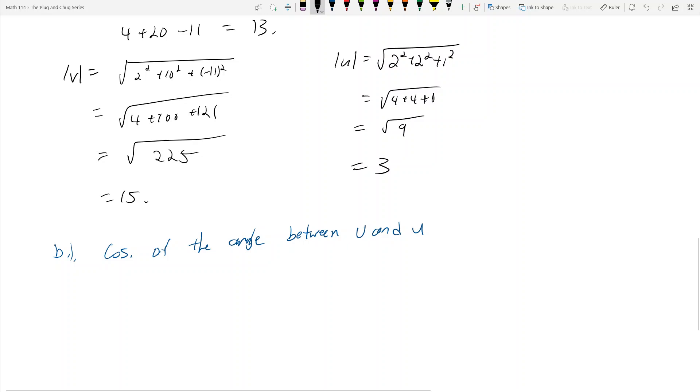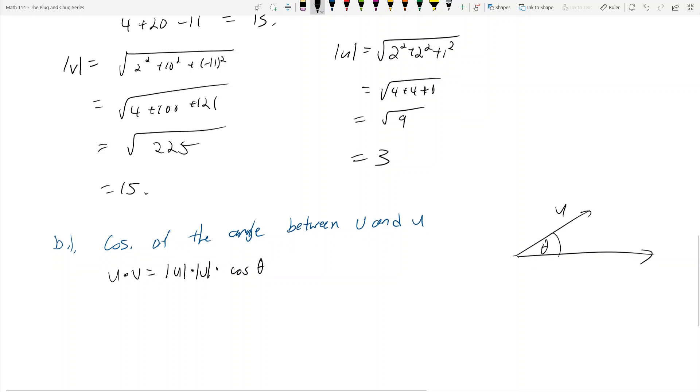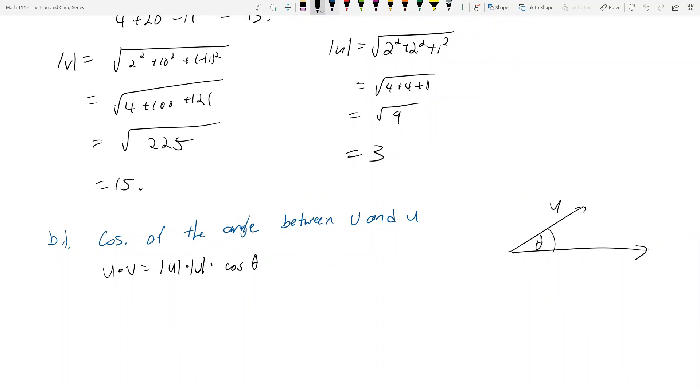But the dot product of u dot v is the same thing as the magnitude of u times the magnitude of v times the cosine theta of the angle between them. So if you have u and if you have v, this is going to be theta right there. And so you want to find cosine of theta.